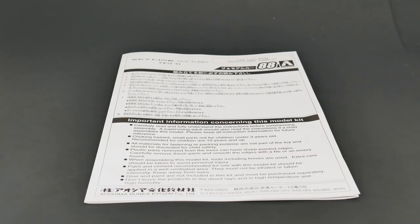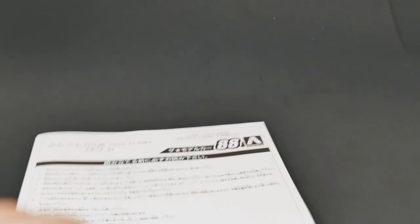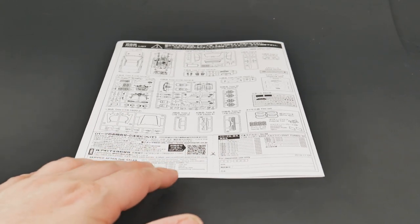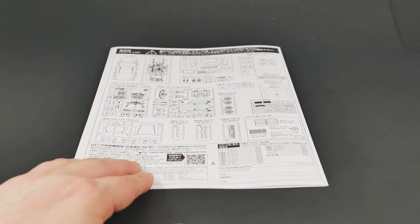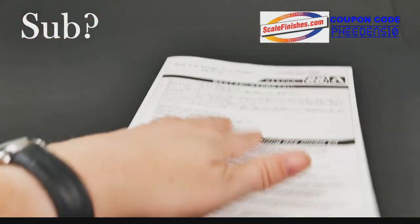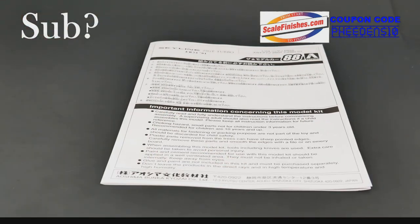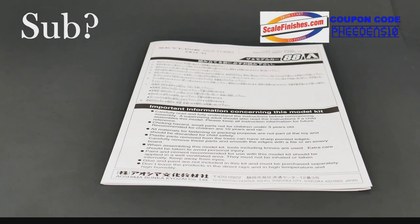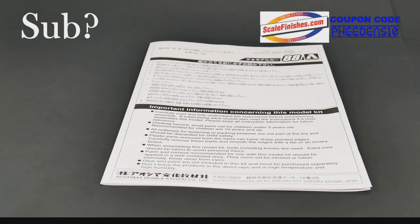So I think that about does it for this what's in the box. Look at the 2001 Nissan Skyline 25GT Turbo ER34 from Aoshima, the stock version. Like I said, they have the wheel option version that comes with a set of TE37s and some ground effects. So on that note guys, thank you so much for watching. We'll see you next time.